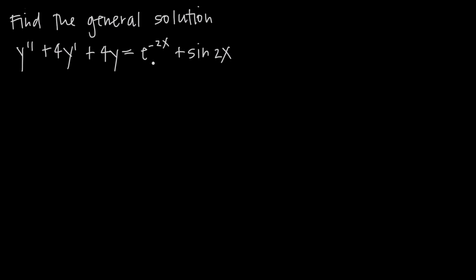Whenever we're solving a problem like this, the first thing we want to do is ignore the right-hand side — we'll pretend it's zero and just deal with the left-hand side. We're going to make a substitution where y double prime equals r squared. We count the number of prime marks: two gives r squared, one gives r to the first, and zero gives just the constant 4. We set this equal to 0 and solve for r by factoring.